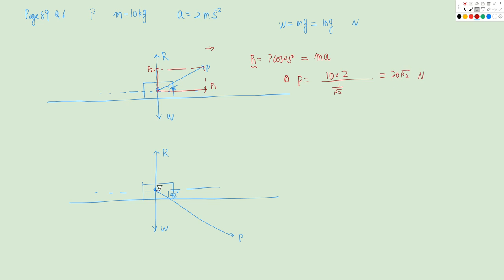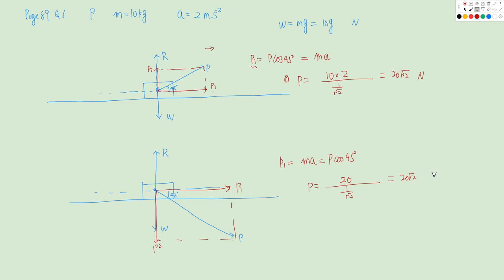In case 2, P acts downward at 45°. Again, we resolve P into P1 (parallel to surface) and P2 (perpendicular). P1 = P cos45° = MA, so P = 20 / (1/√2) = 20√2 Newton. Whether P acts upward or downward at 45°, the result is the same: P = 20√2 Newton.